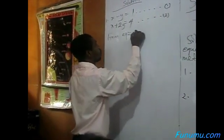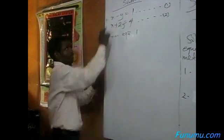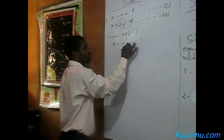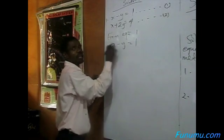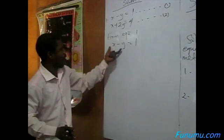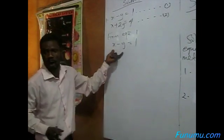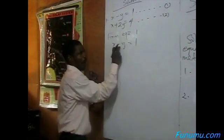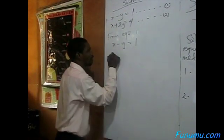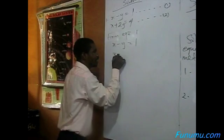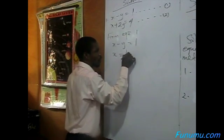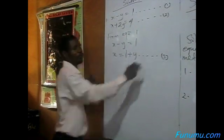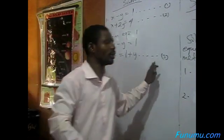From equation 1, equation 1 is: x minus y equals 1. Make x the subject of the formula. To make x the subject of the formula, what will you do? You take this y to the other side. This will give us x equal to 1 plus y. Call this equation 3.